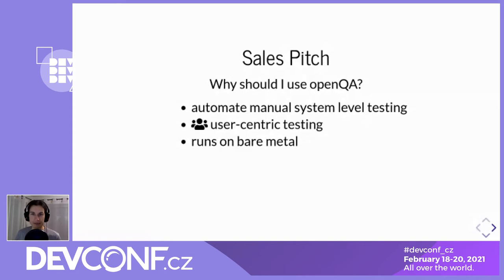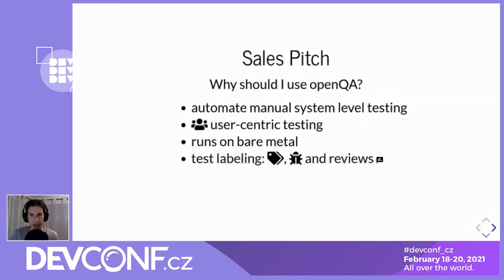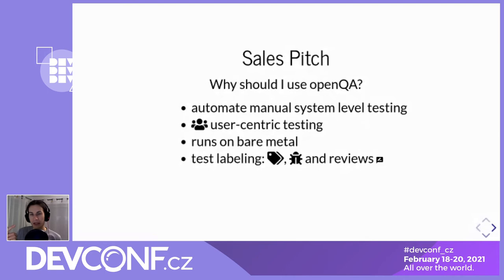OpenQA also supports extensive test labeling and automated bug tracking. You can attach labels and bugs to specific failing tests, which allows a release engineer to get a full overview of all the tests belonging to a single build. You'll see which test is failing and there's a bug for that, and you as a release engineer can quickly decide whether it's a blocker bug or whether you can tolerate it and still release. You can also review those automatically.